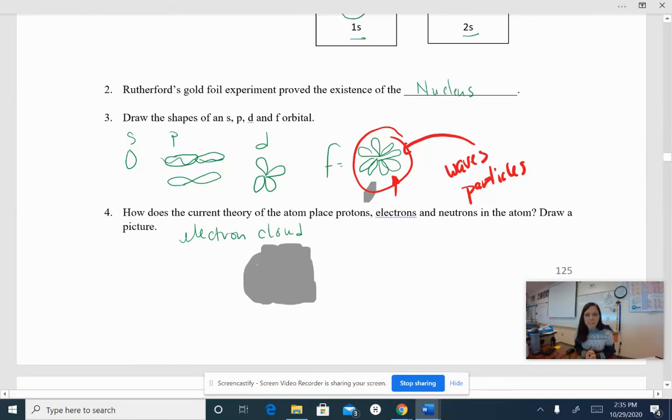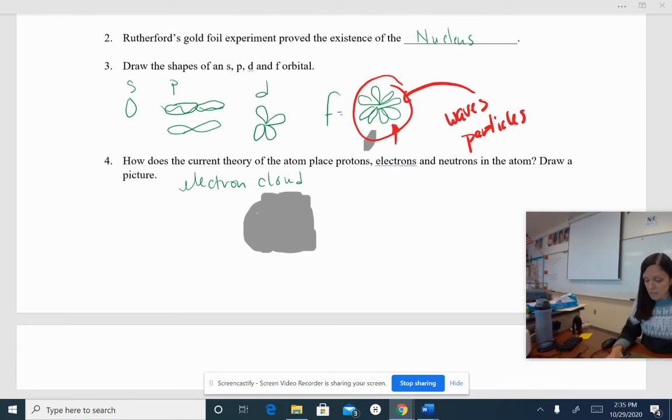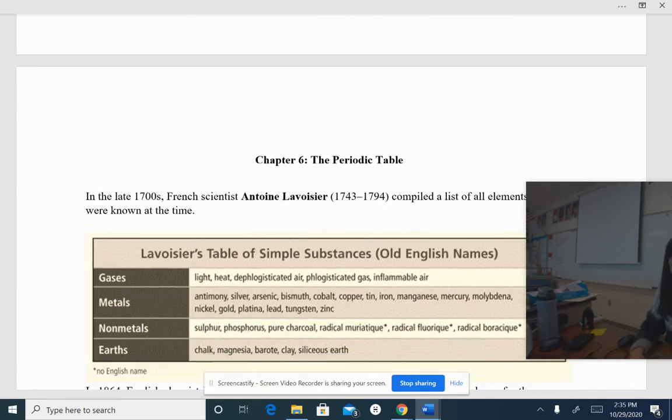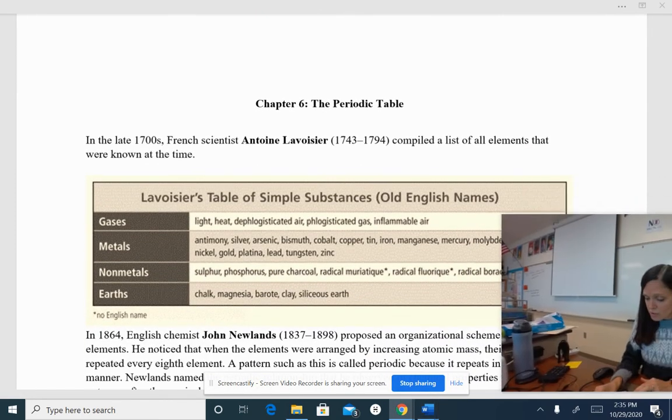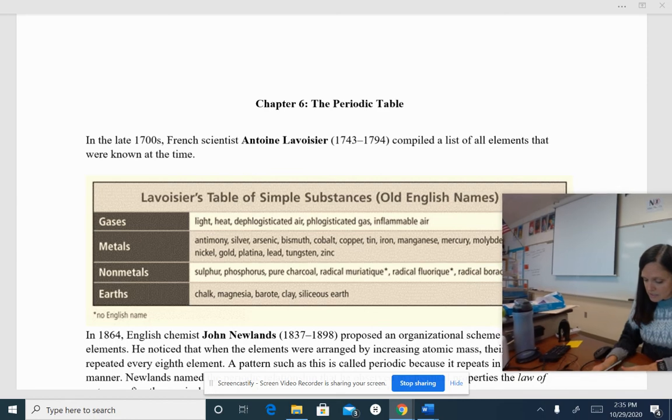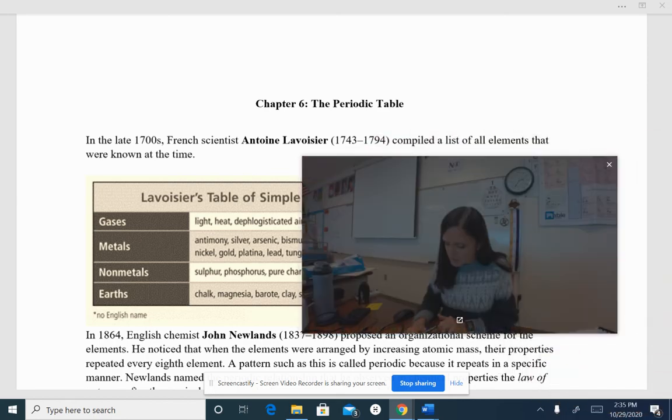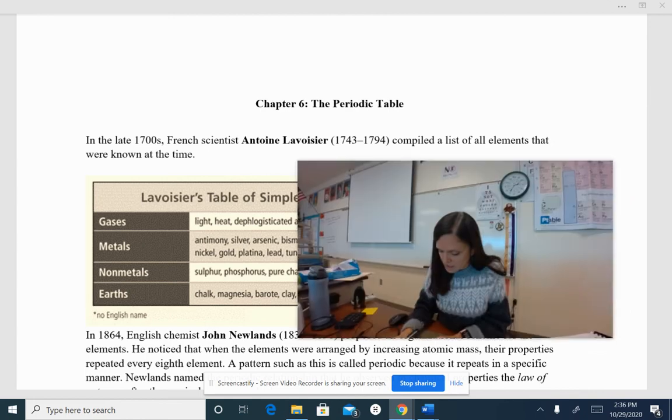Okay, honors chem kids. We are now going to look at the other periodic properties that we can get from the periodic table. So we're starting a new chapter here, chapter 6.